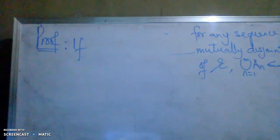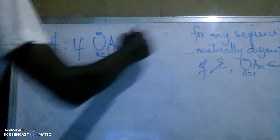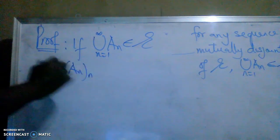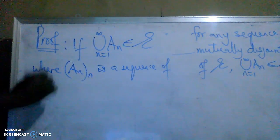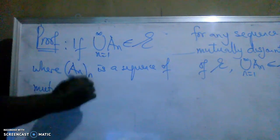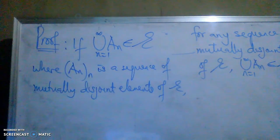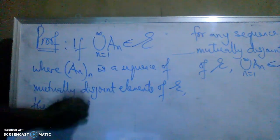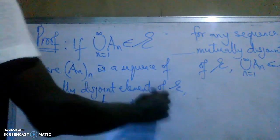Let's start with the 'if' direction. The union of the sequence is in E, where this sequence is a sequence of mutually disjoint elements. Then, by definition, it is clear that E is a sigma-algebra, from our knowledge of the definition of a sigma-algebra.